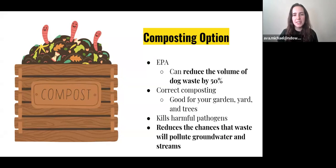There is also a composting option. However, dog waste that was produced from a meat-eating dog should not be used for compost piles. You can look up the restrictions or what is recommended for different dogs or dog foods if you are going to consider composting. The EPA has estimated that you can reduce the volume of dog waste by about 50 percent, and correct composting can be used for your garden, your yard, as well as your trees. It can kill harmful pathogens. Maybe for meat-eating dogs not quite as easily, but for dogs that don't have a meat-rich diet, it can kill some of those pathogens. It reduces the chances that waste will pollute groundwater and streams. If you want to have a positive environmental impact, this is a great way of doing it.